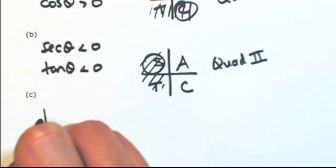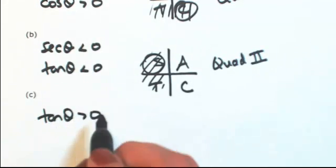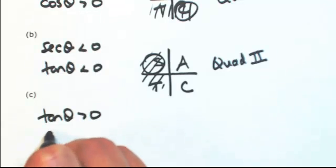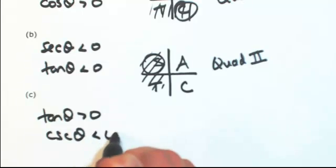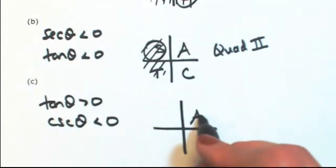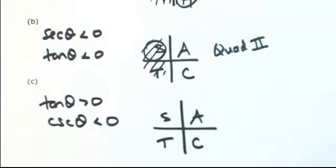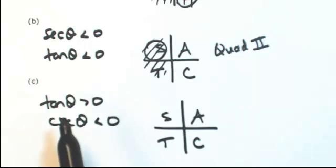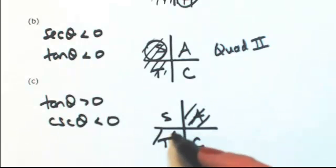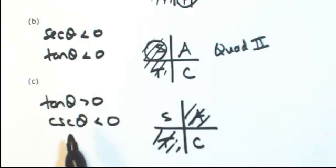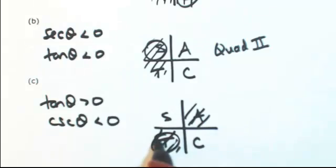One more: if tangent of theta is positive and cosecant of theta is negative — tangent is positive in quadrants one and three (A and T). Cosecant is the reciprocal of sine, so we're looking for where sine is negative, which is quadrant three. So theta is in the third quadrant.